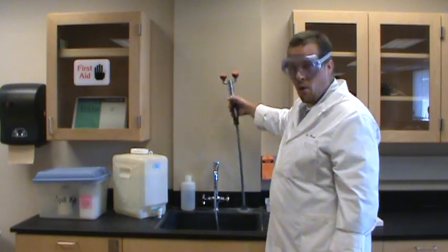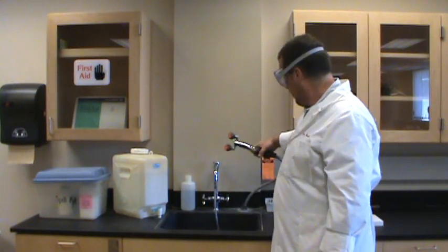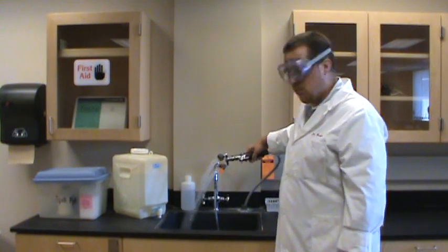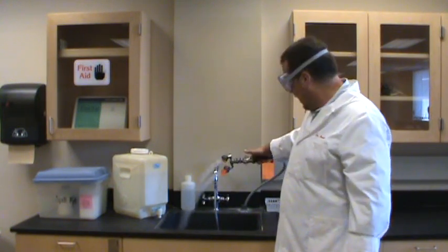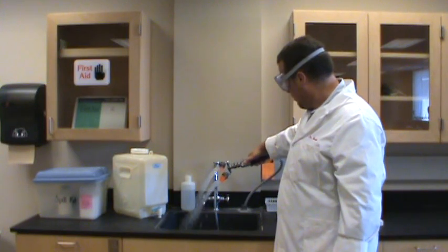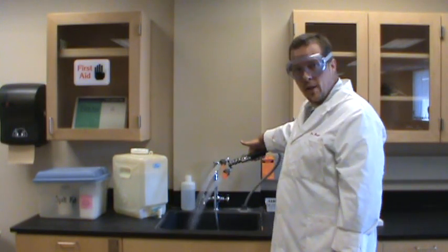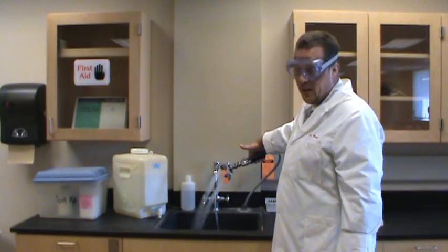There's also an eyewash station beside each of the sinks. These are on a hose so they can be pulled out and squeeze the handle, water will come out. If you want to lock that handle in place, there's a little ring there that locks it kind of like a garden hose.